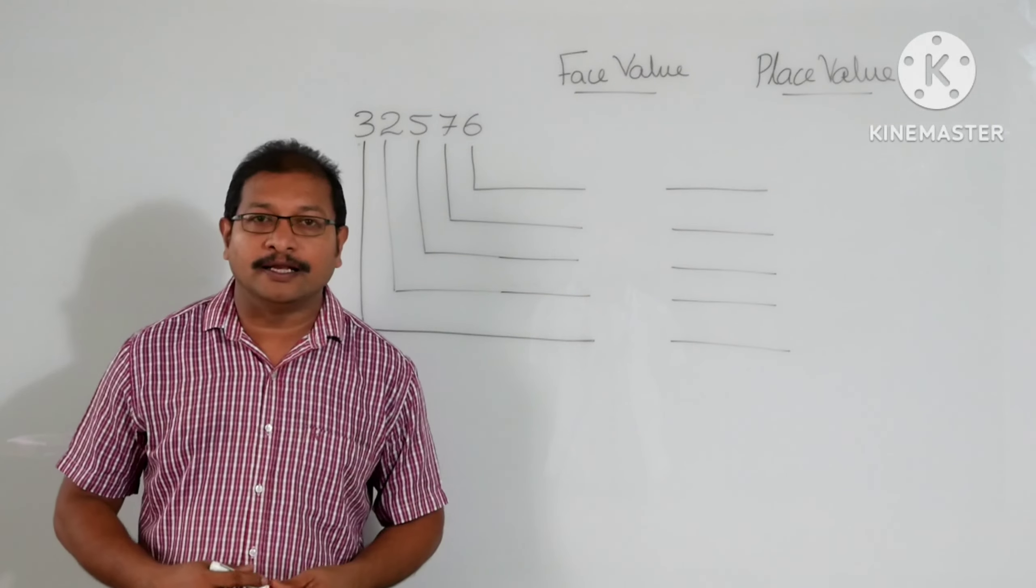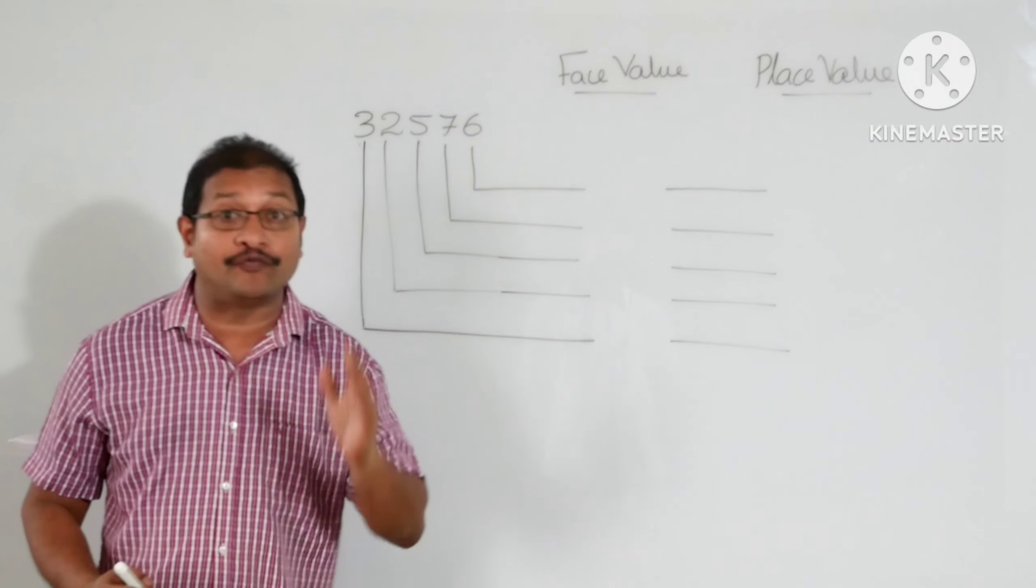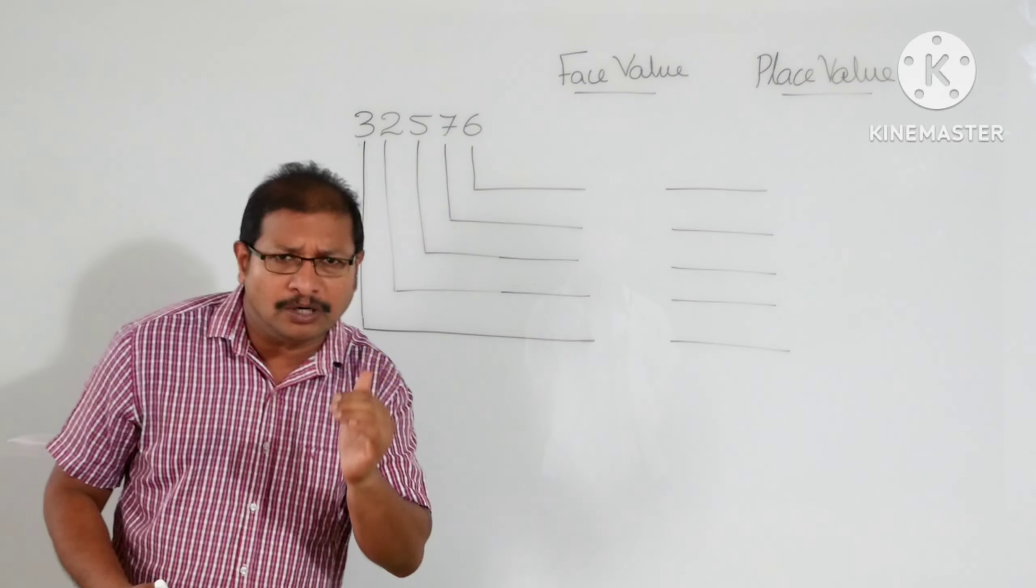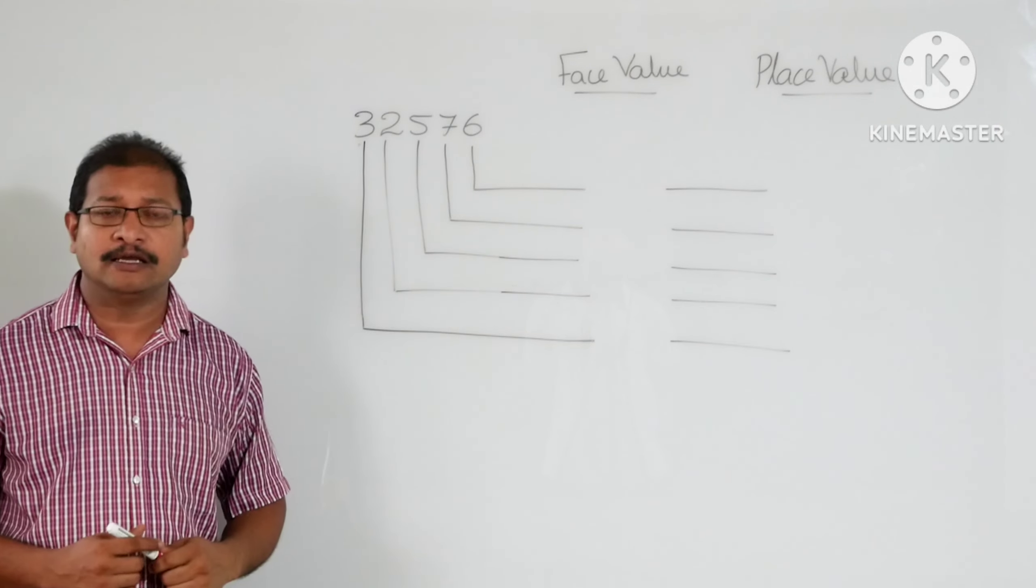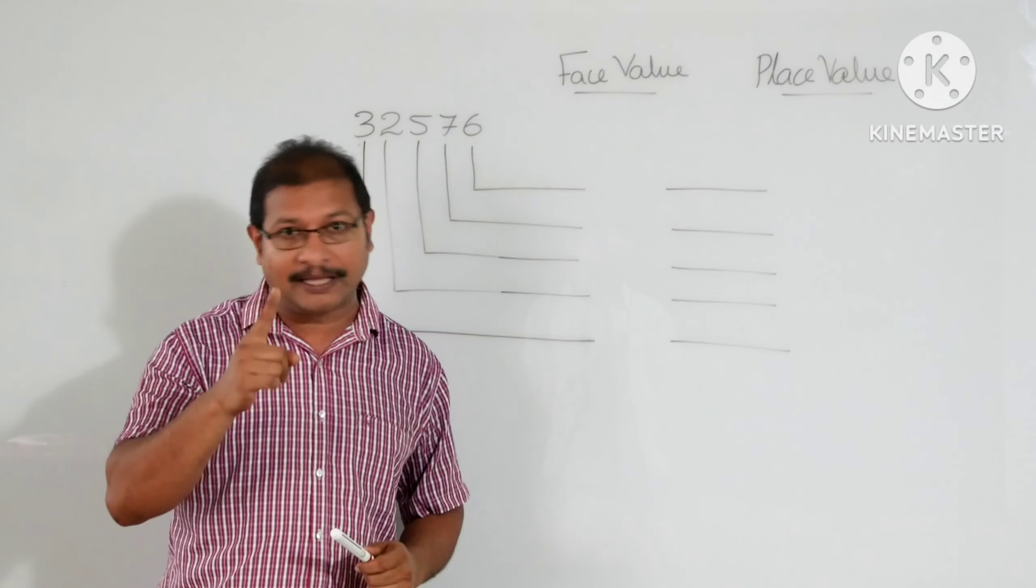Hi students, let's see from the number system, the place value and face value of a digit. We know that numbers are formed by digits. Of course, each digit has face value and place value. Let's see.